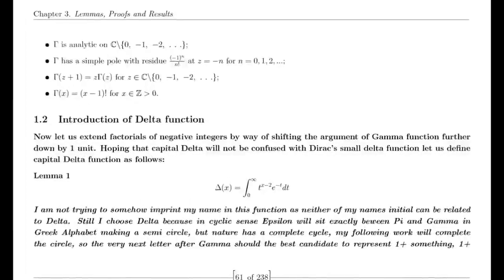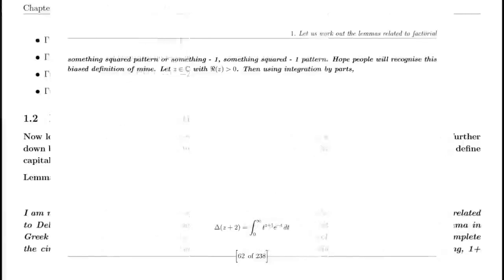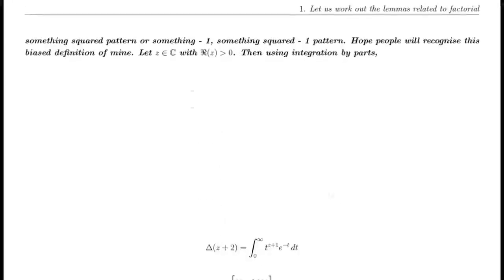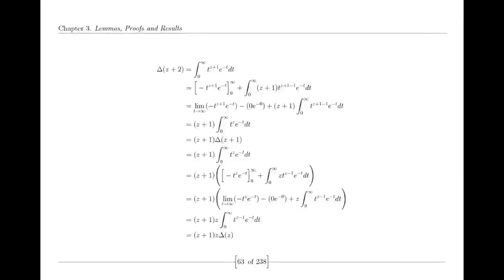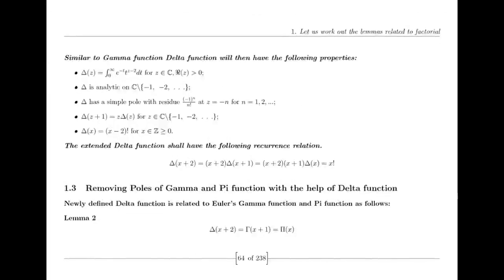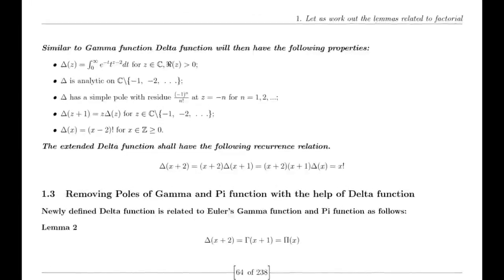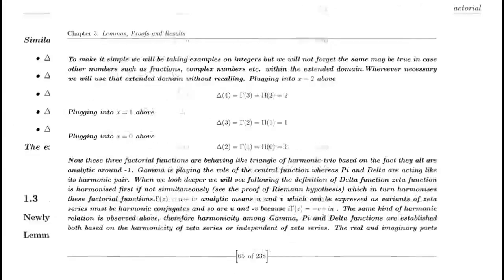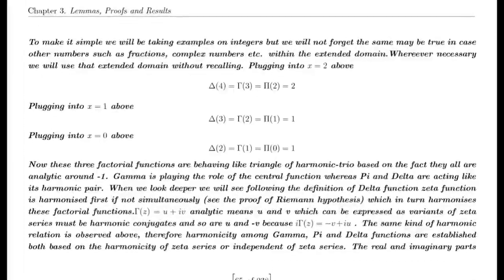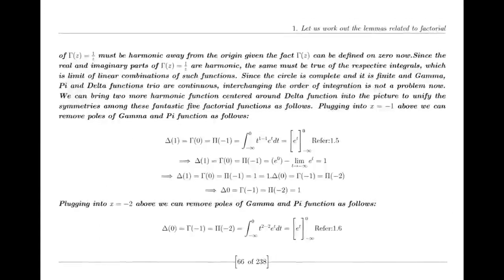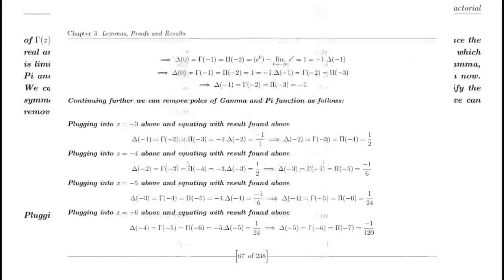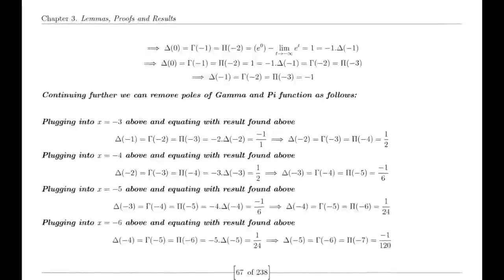Not only that, but the Hubble constant, despite having an altogether different unit of measurement, also seems to settle around the value 69. Why does this value, measured in km/s/Mpc, keep hovering around 100 times the natural logarithm of 2? These questions are crucial for understanding the deeper mathematical structures that underlie the Riemann Hypothesis. The consistency of these values across different domains suggests there might be more profound hidden connections waiting to be uncovered.